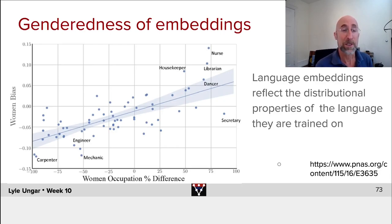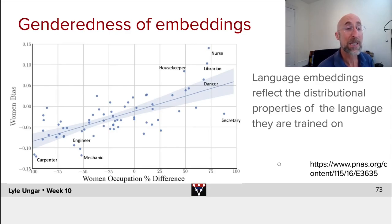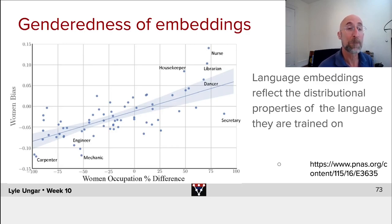Let's look at the genderedness of different embeddings. Here's the embeddings of a bunch of different words, like nurse and secretary and carpenter and engineer. On the x-axis is the percentage of women in this occupation in the U.S.